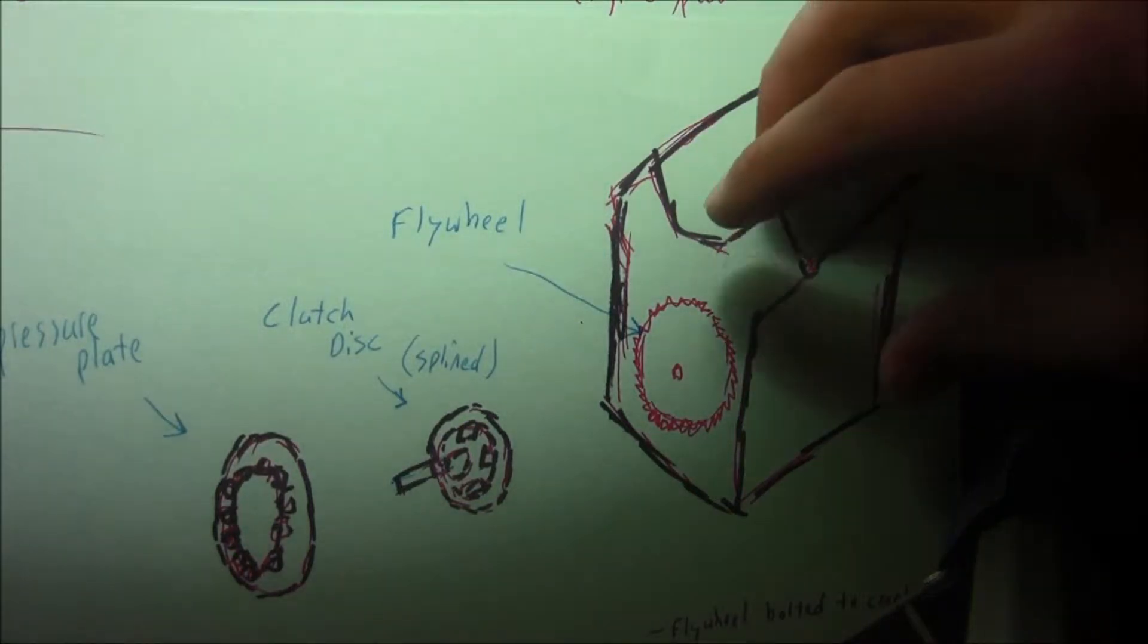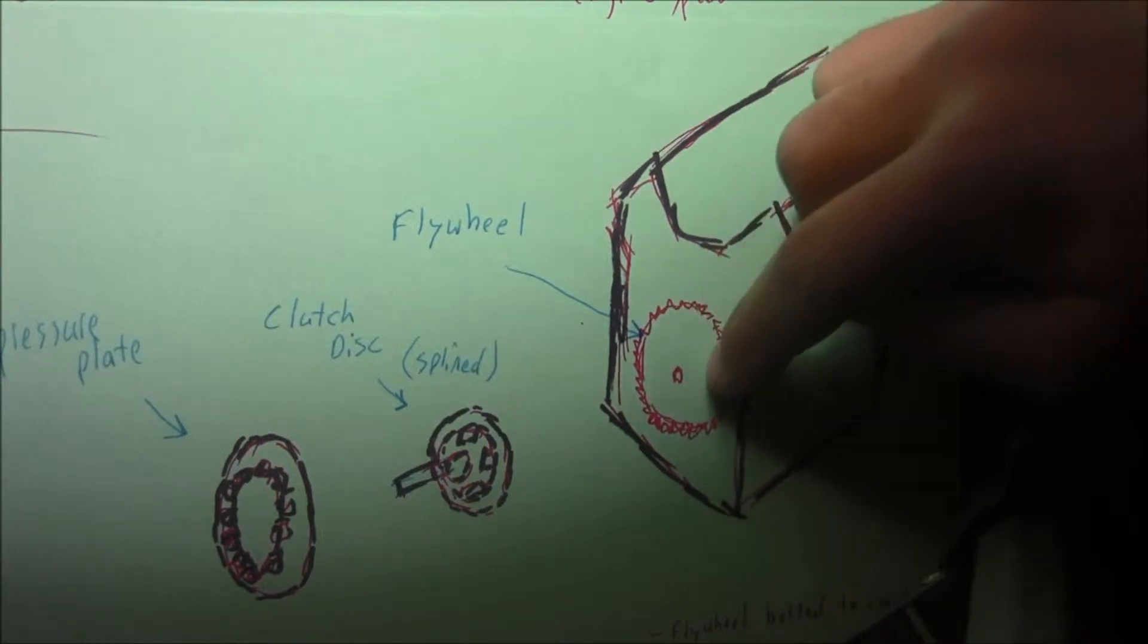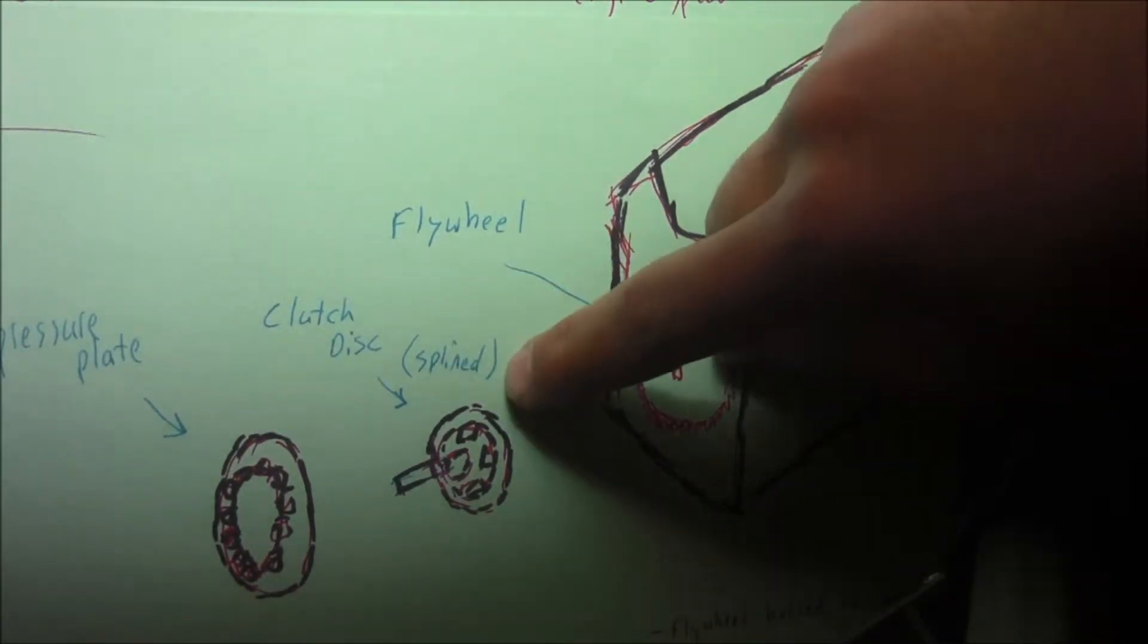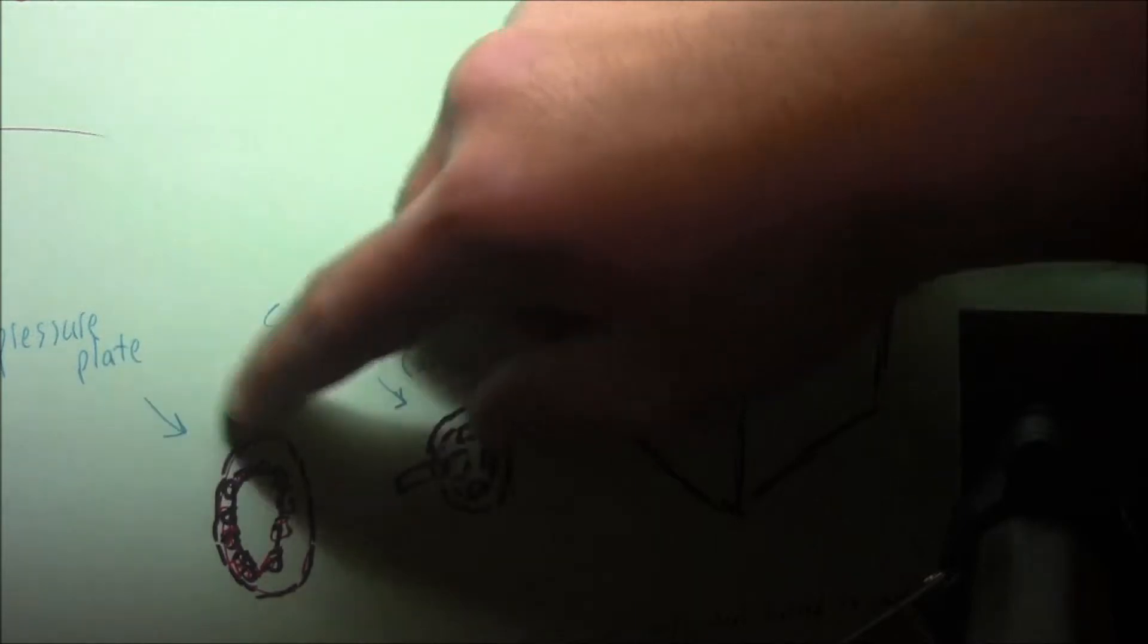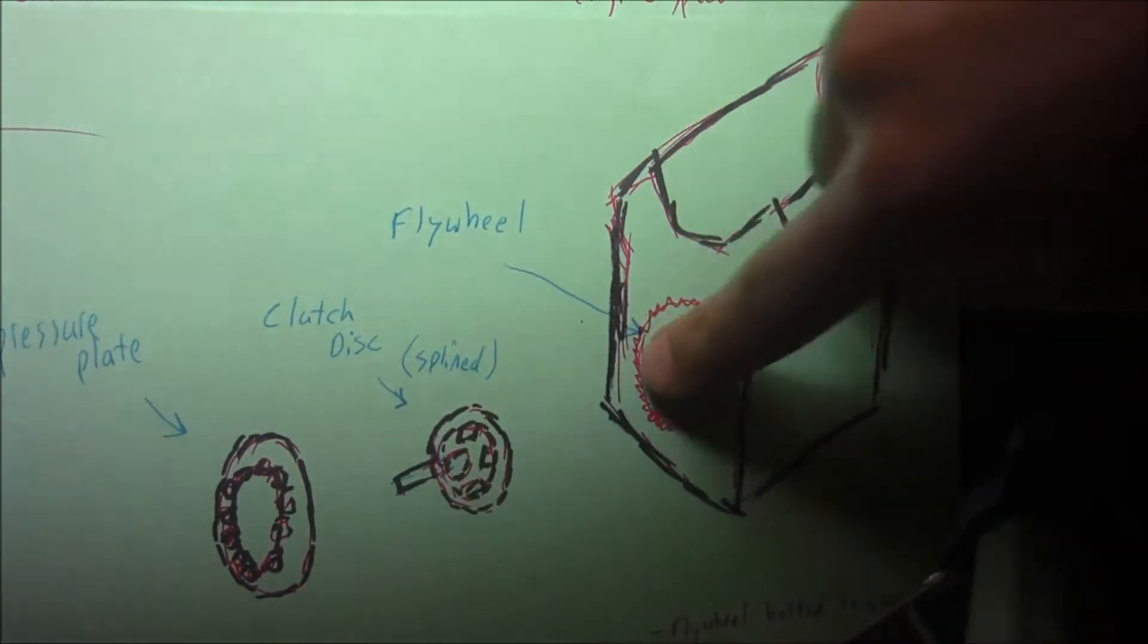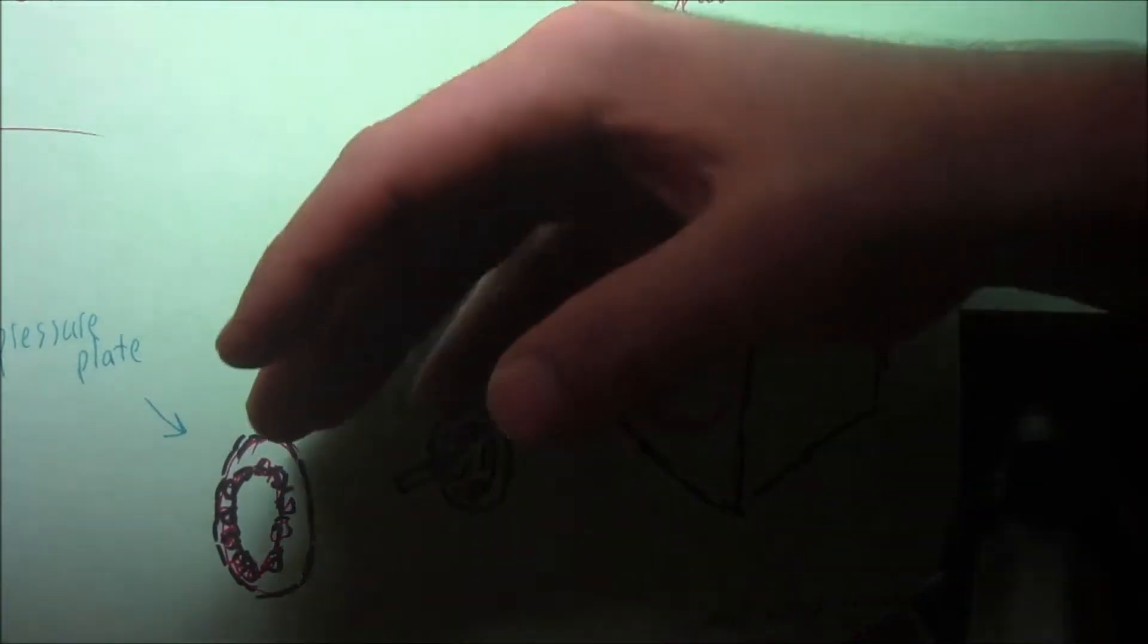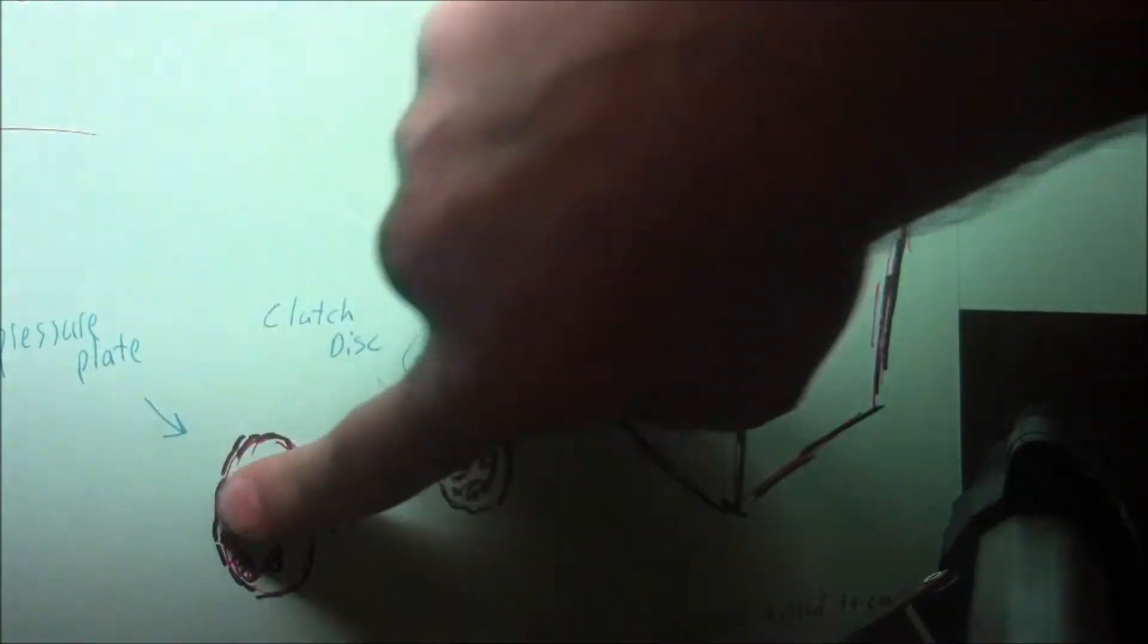So what you have is your engine, your crankshaft in here, your flywheel is connected to it, and then you have a clutch disc which is splined. The pressure plate goes on the flywheel, and that spline connects to the release bearing. It connects all the way through.